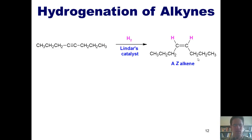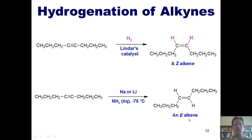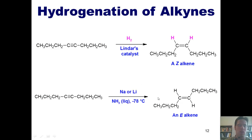What if I don't want a Z alkene and instead want to convert my alkyne into an E alkene? If you take your alkyne and treat it with sodium or lithium in liquid ammonia at negative 78°C, you can put two individual hydrogen atoms on the carbon-carbon triple bond and get the E configuration, giving you an E alkene. These conditions stop there. I do not require you to know the mechanism, but it is found in your text.